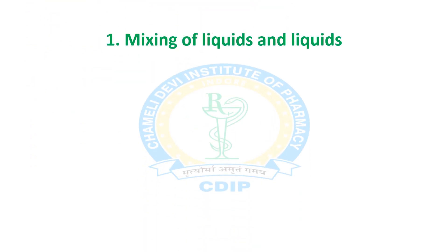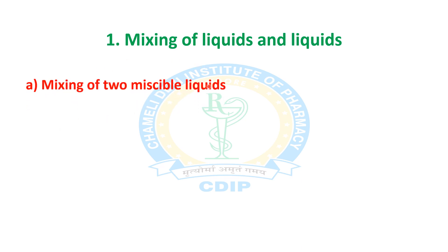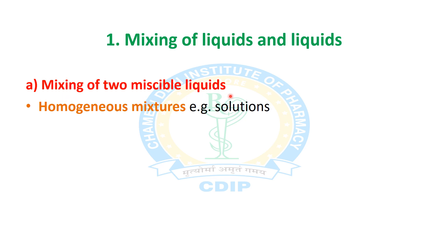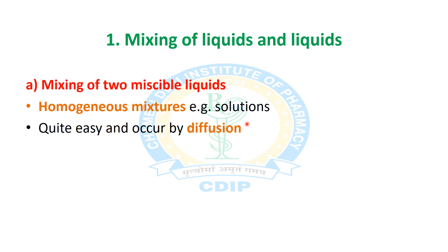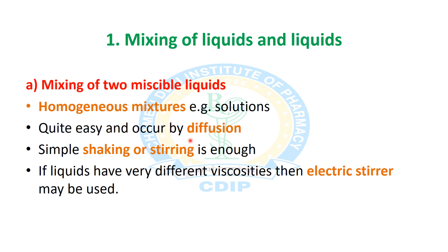The first step is mixing of two miscible liquids, which is known as a homogeneous mixture. An example is solutions. This process is done by diffusion and is quite easy, normally accomplished by simple shaking or stirring. If the miscible liquids have different viscosities, an electric stirrer may be used, and sometimes turbulence is created in the liquids being mixed.